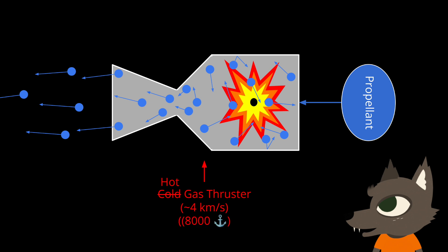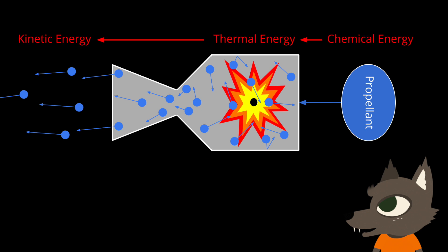Unfortunately, there's a hard limit to how fast we can accelerate the exhaust with this technique. There's only so much chemical energy that can be released by burning the propellant, and we need to turn that chemical energy into the kinetic energy of the fast-moving exhaust. Even if we had a perfect rocket engine, each bit of propellant couldn't be accelerated so fast that it ends up with more kinetic energy than the chemical energy it started out with.